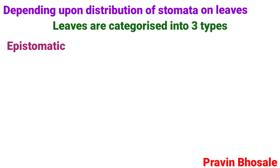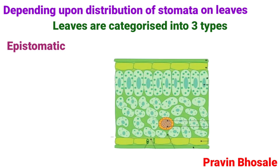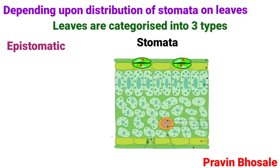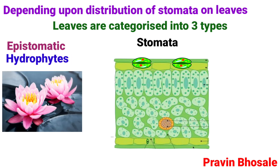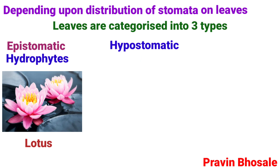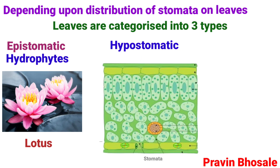Epistomatic: stomata are present only on the upper epidermis. Example: hydrophytes such as lotus. Hypostomatic: stomata are present only on the lower epidermis.